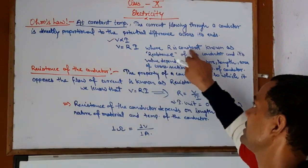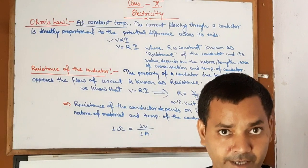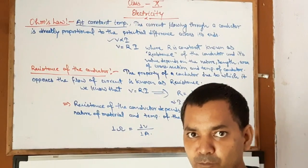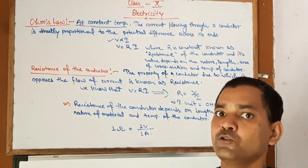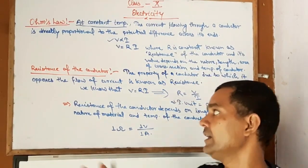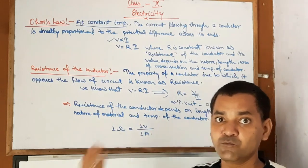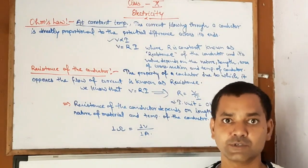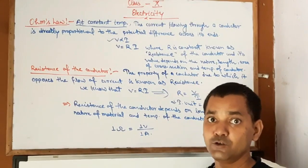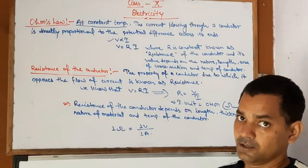When we define resistance, consider this: you came from Class 9 to Class 10 and studied friction very well. What does friction do? Whenever we move, friction opposes that movement. Similarly, resistance opposes the movement of current — it tries to stop current from moving. That is what we call resistance.